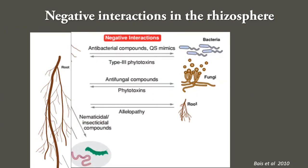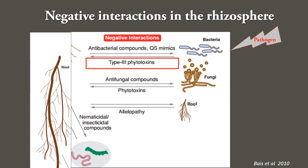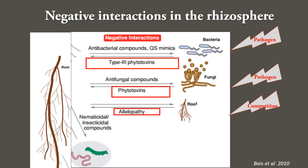In negative interaction, the plant is harmed. Bacterial pathogens infect plant roots, and in response, roots release antimicrobial compounds to inhibit bacterial growth. Plants release antifungal compounds against fungal pathogens, which in turn release phytotoxins to harm the plant. Plants also fight with incompatible neighboring plants using allelochemicals. Nematodes lay eggs in plant roots and scavenge nutrients, for which plants release insecticidal compounds.